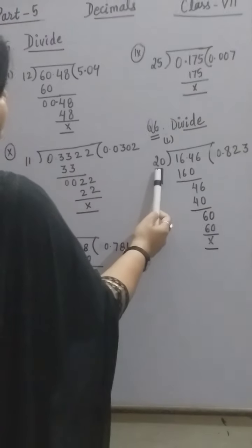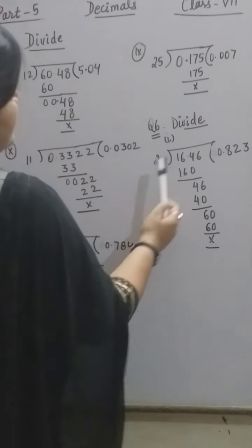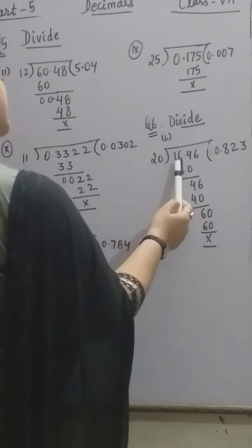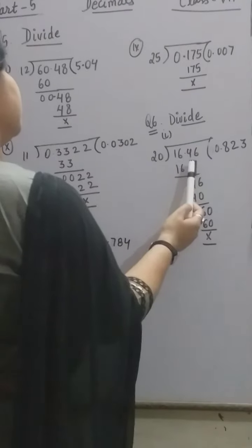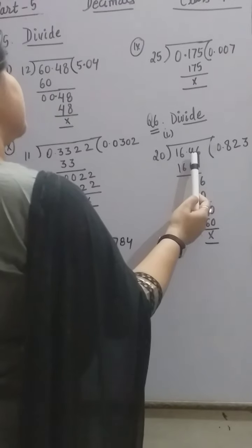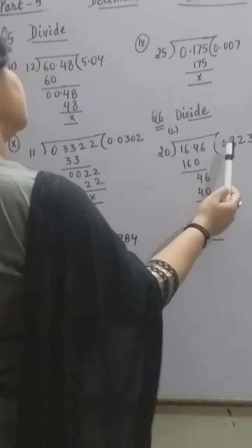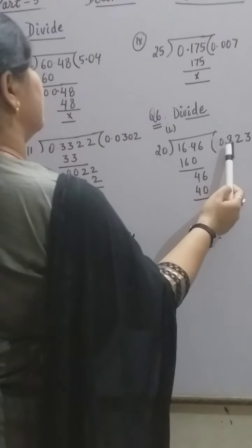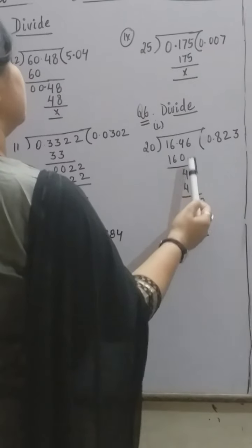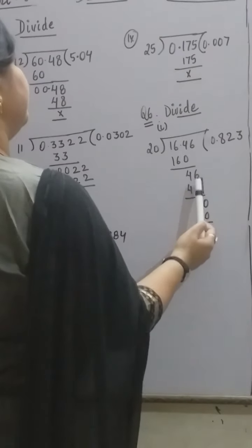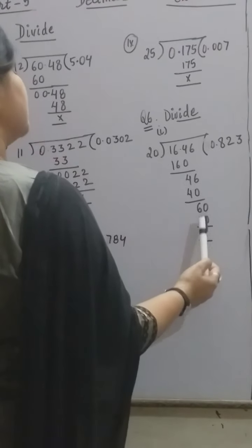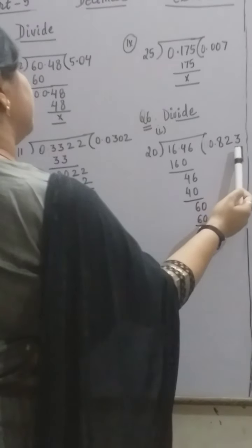Question number 6, part 1: we have to divide 16.46 by 20. Here 16.46 is the dividend and 20 is the divisor. 16 is less than 20, so we bring down 4 as well. Since 4 is at the 10th place and is going to participate in the division, we write the decimal point and 0 in the quotient. 20 eights are 160; we are left with 4, bring down 6. 20 twos are 40, left with 6; place 0. 20 threes are 60. So our answer is 0.823.